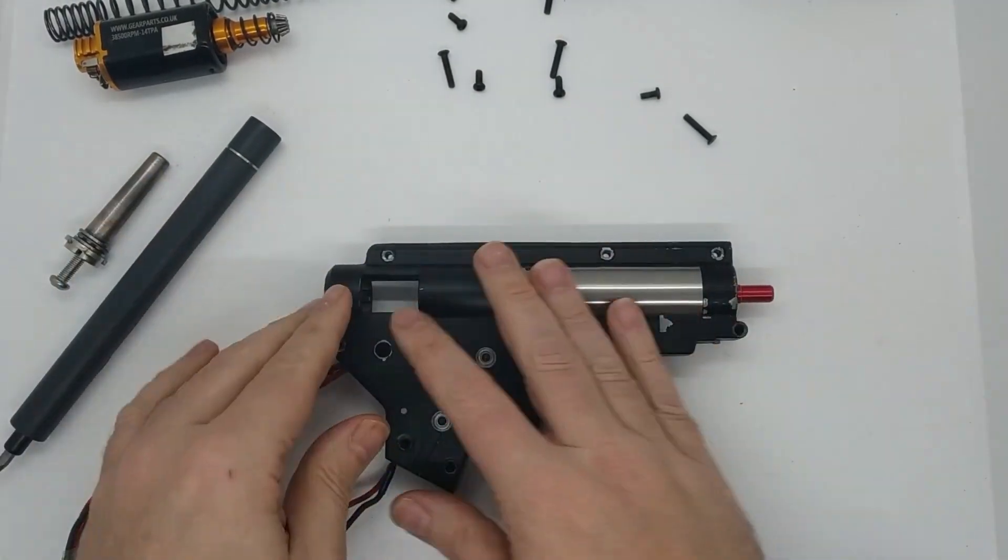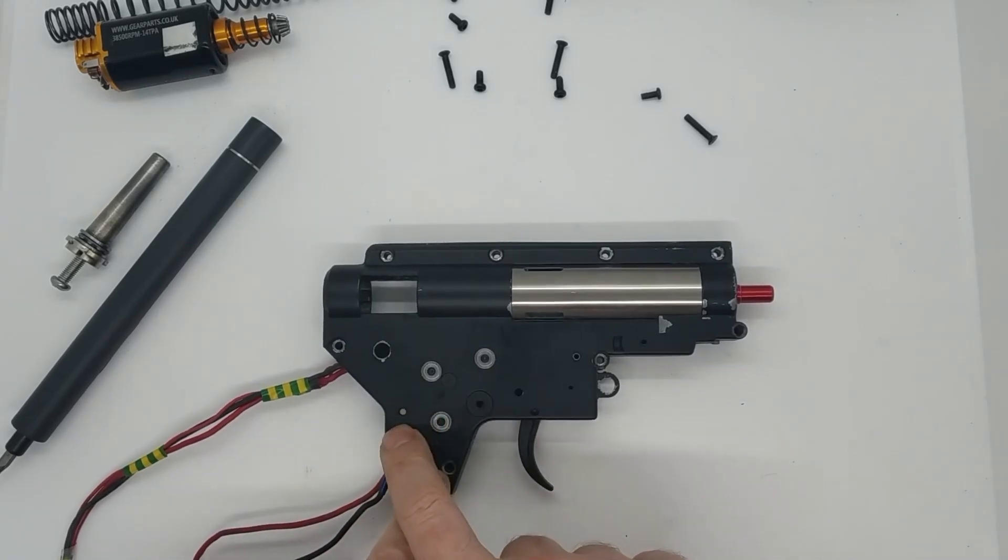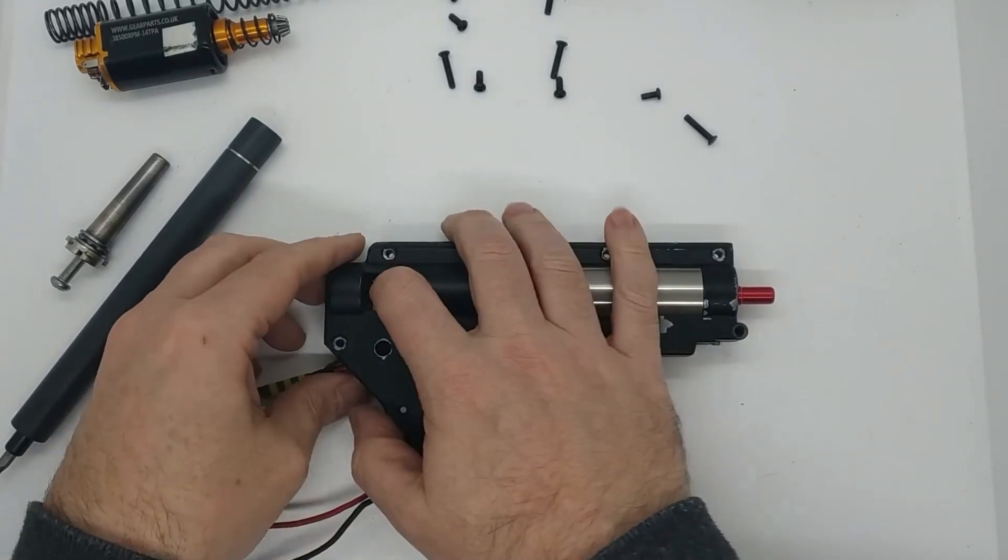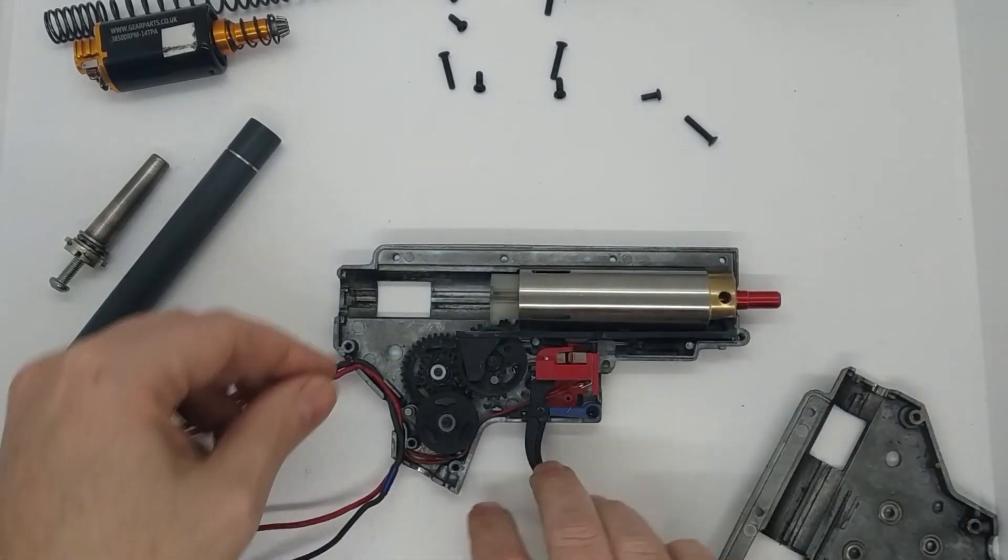Anyway, back to the gearbox. I said before that I think the AR latch had gone. Let's have a quick look in there. Yeah, you can see we've got a little bit of mush.